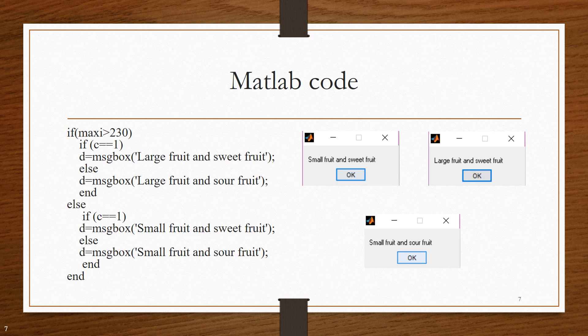Similarly, if the maximum distance between two white pixels is less than 230 and if c is 1, it is small fruit and it is sweet or else it is small fruit and it is sour.